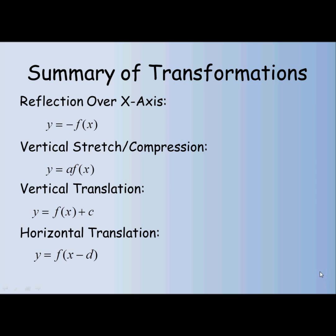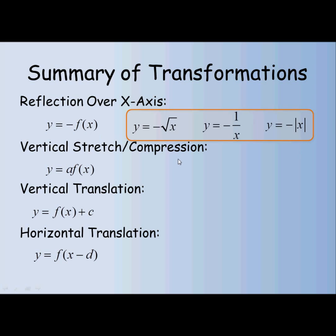First of all, we've got a possibility of reflection over the x-axis, and that happens when there's a negative in front of the function. In the case of quadratic functions, that would look like y equals negative x squared. With the other parent functions, the negative is in front of the square root of x, in front of the fraction part in the reciprocal function, and in front of the absolute value sign in the absolute value function.